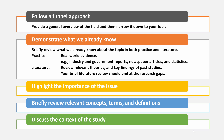Follow a funnel approach and provide a general overview of the field and then narrow it down to your topic. In this process, briefly review what we already know about the topic in both practice and literature. Review real-world evidence about the issue from industry reports, government reports, and newspaper articles, and support them with statistics. Then show what we know in the literature — you can review relevant theories, key findings of past studies, and don't forget to highlight the importance of the issue and briefly review relevant concepts, terms, and definitions.